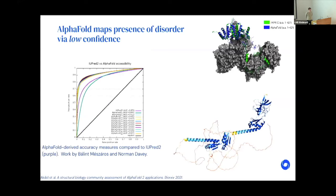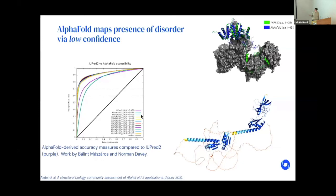The scariest moment in the project was when we started predicting lots of human proteome proteins and they looked unlike anything in the PDB — definitely not protein structures. I may have gotten a PhD in a biophysics group, but I knew that's not a structure that would appear in the PDB. After a few days, someone checked against UniProt and noticed these corresponded well to UniProt disorder annotations.